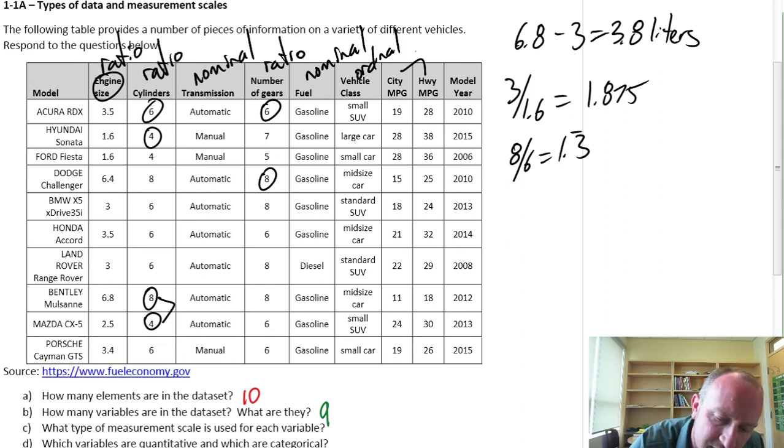City and highway miles per gallon. Again, these are ratio values. Model year. Model year. This is just like the example that I used earlier on. Here I can order these based on newest to oldest cars. And similarly, I can look at the difference between any two to see how many years older or how many years newer is one car relative to another. So this is our interval variable.